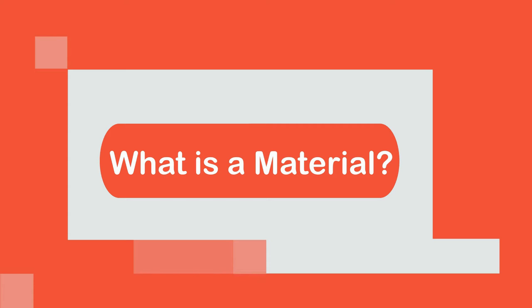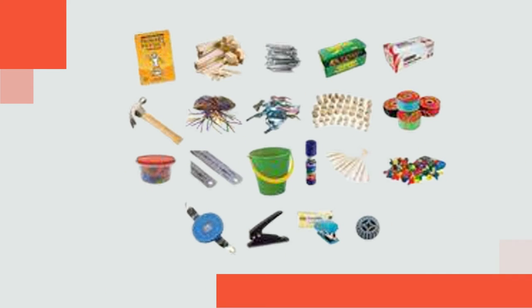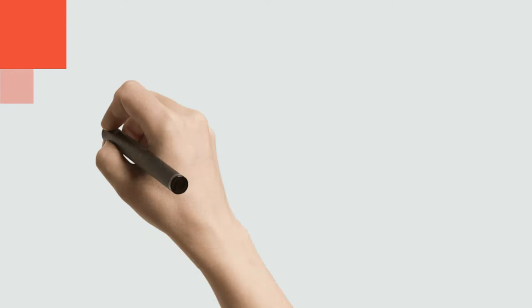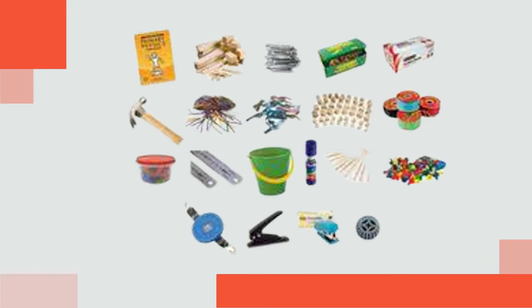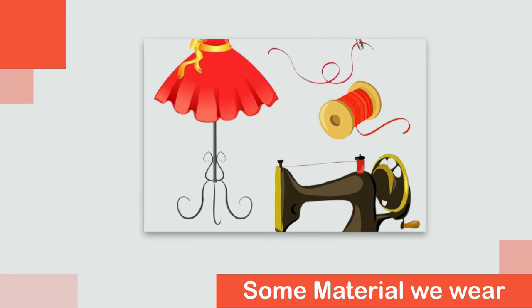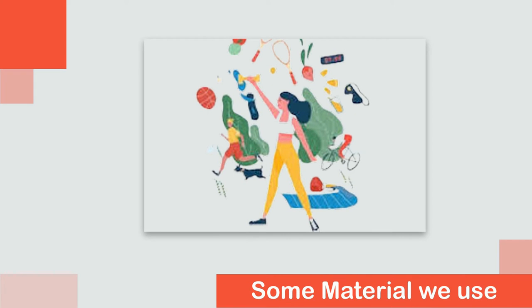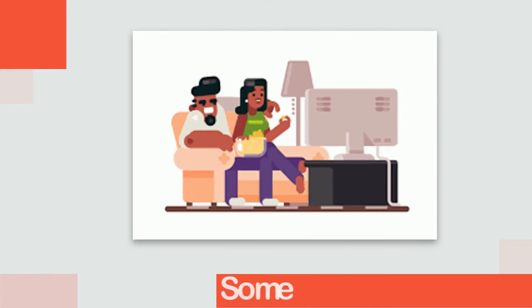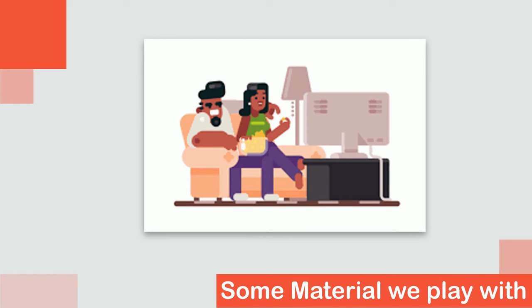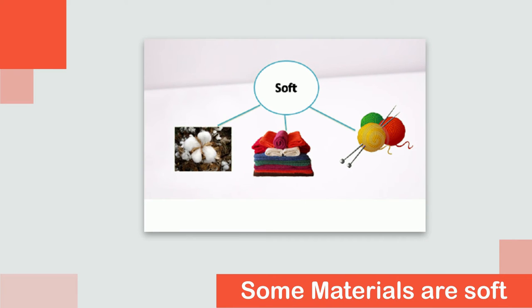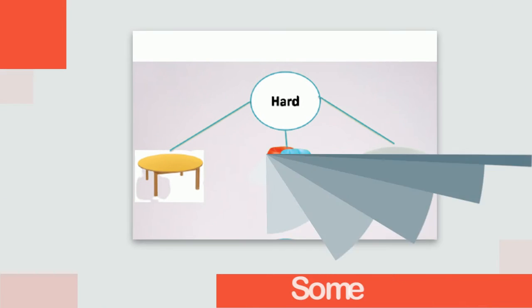What is a material? A material is a substance that is useful for one or another purpose. Different materials are used for making different objects or parts of objects that we see around us. Every material has a different job due to its nature. Some materials we wear, some we use, and some we play with. Some materials are soft while some are hard.